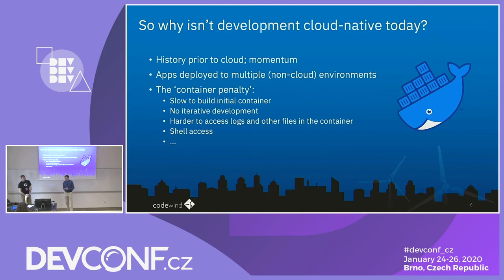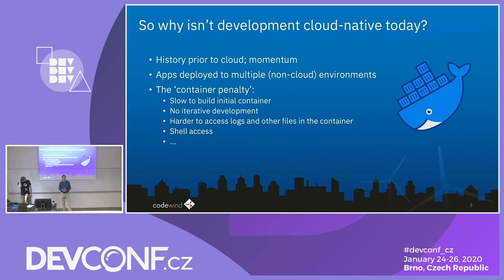Cloud native development history: many people are doing local development — you've got your local IDE, local runtime, running through that, then checking into GitHub and picking up the CI/CD pipeline. People are moving more and more into cloud development, but deployment is much further along than direct development on cloud, because there are some penalties associated with that. Running containers means you need to build them, which takes time, and with iterative development, if you recycle a container, the server gets recycled and you lose state.